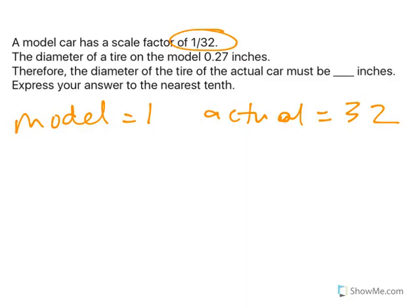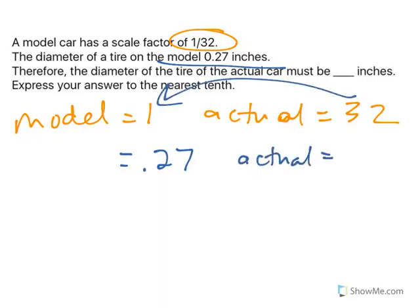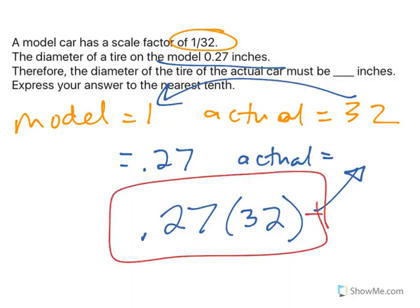In our problem, the model is 0.27. The actual is 32 times the model, so if I take the model and multiply by 32, that gives me the actual, because the actual is always 32 times bigger than the model. When I take 0.27 times 32, I get an answer of 8.64.